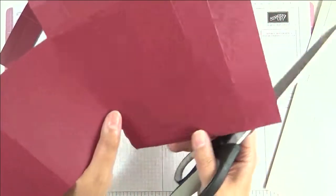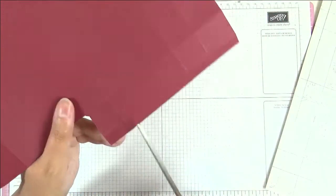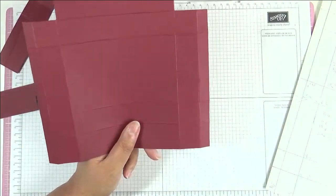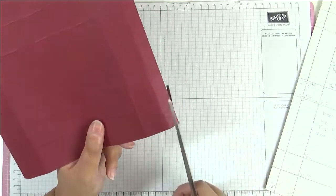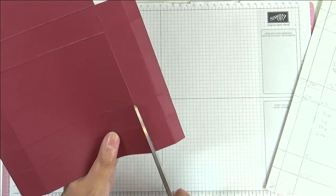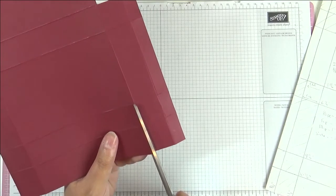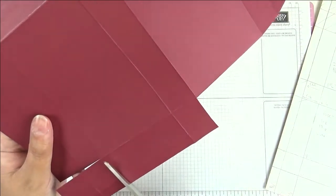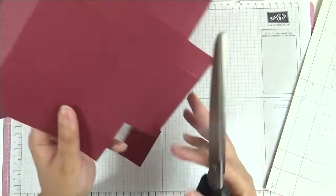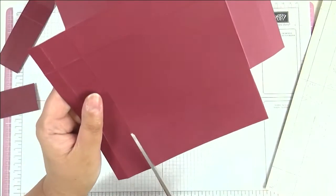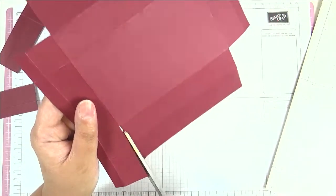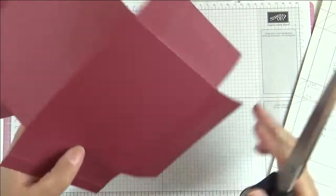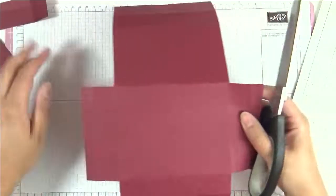Then I'm going to cut here on the opposite side. Again, second score line in, but this time I'm only going to cut up until the second score line and take that out. Again the same on the side, second score line in and up to the second score line this time, and take that piece out. So that's what we've got so far.